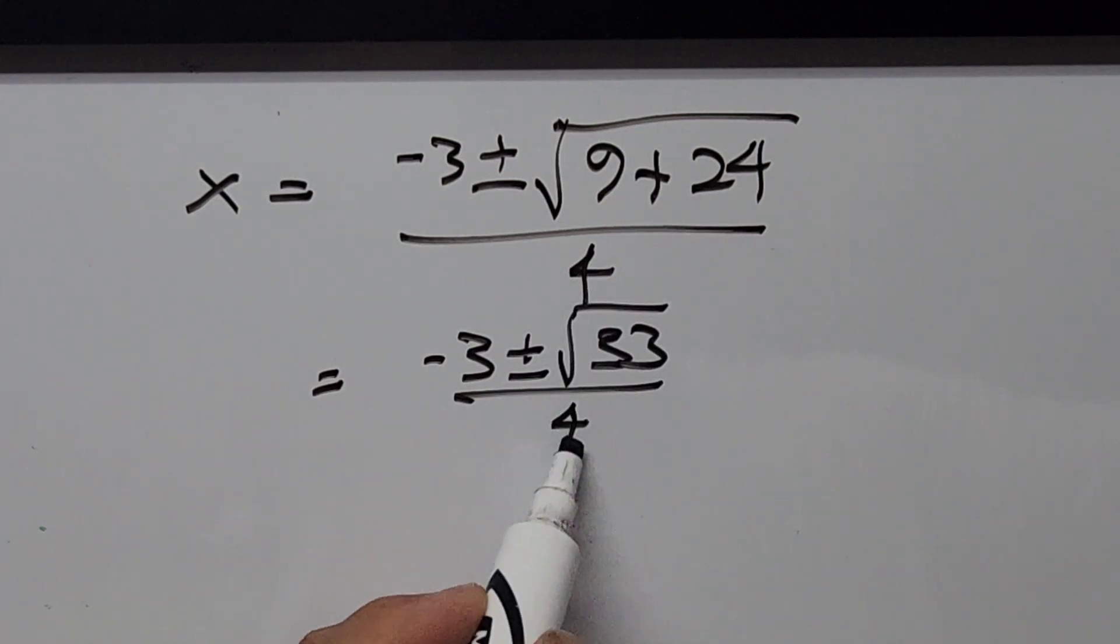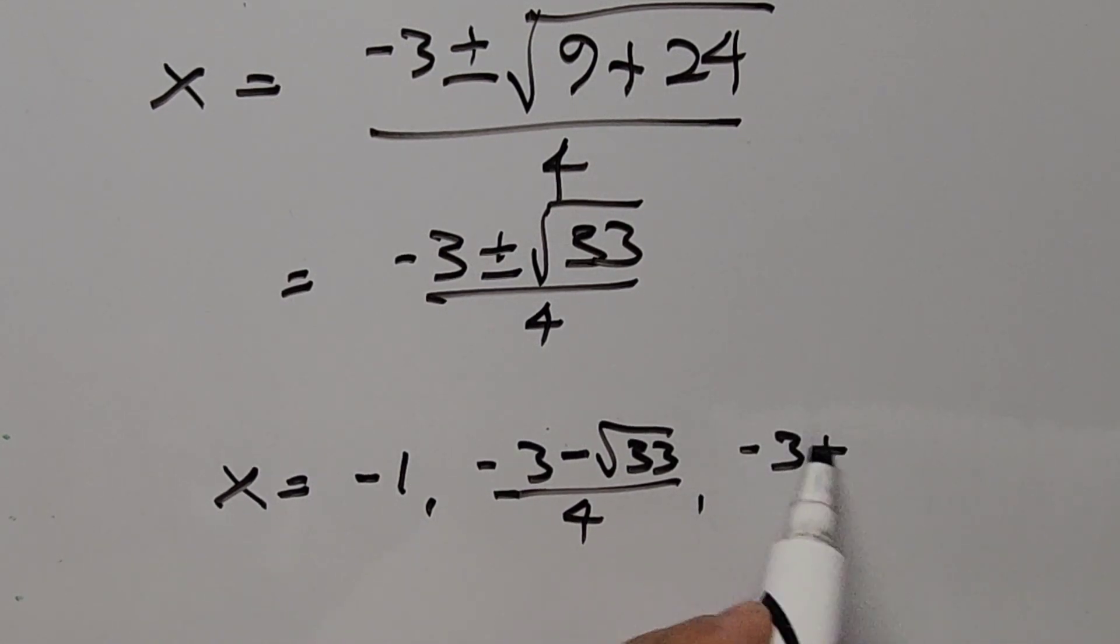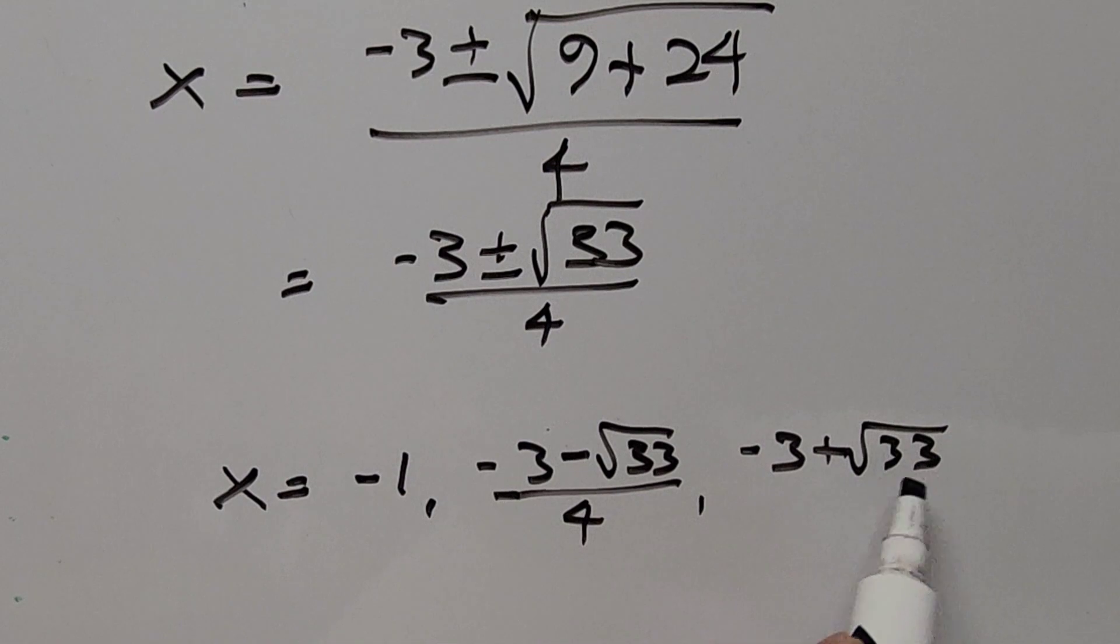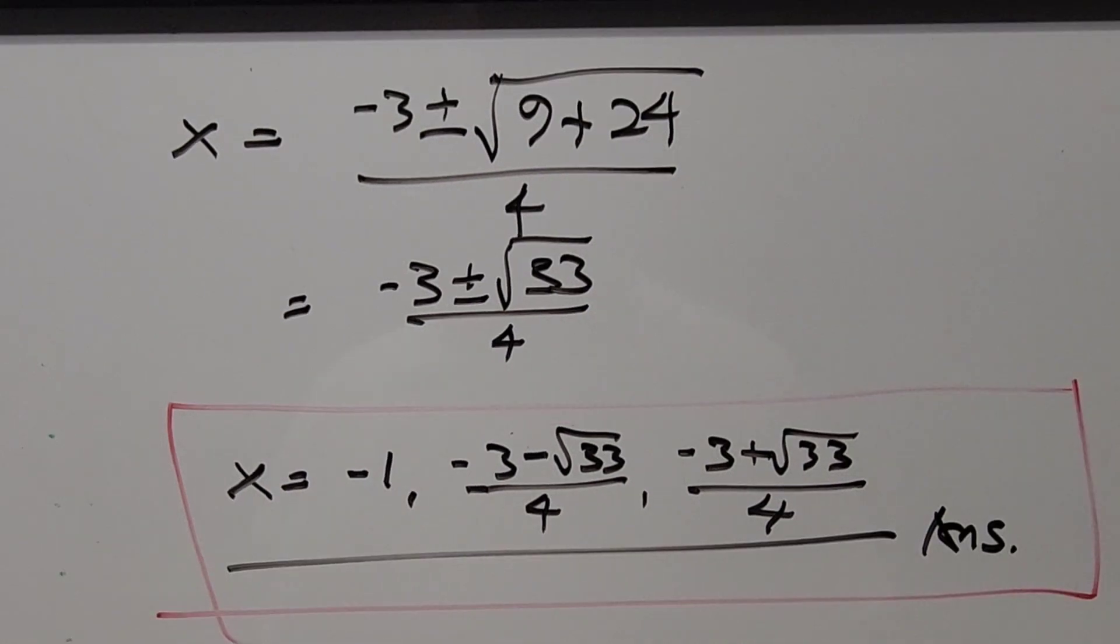So we have here the values of x. x is equal to, from the first value is -1, and (-3 - √33)/4, and the last one is (-3 + √33)/4. These are our solutions to this equation. And so thanks for watching everyone.